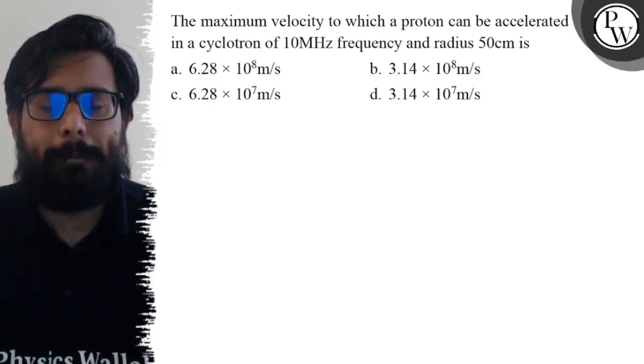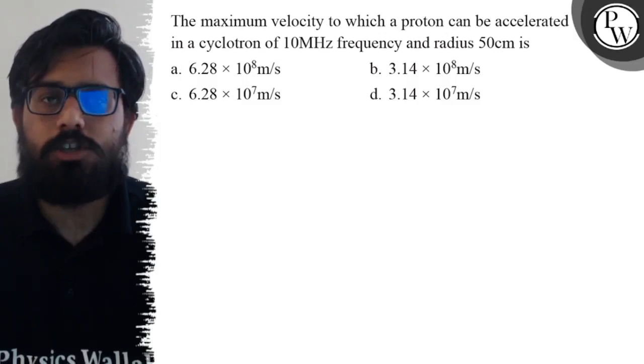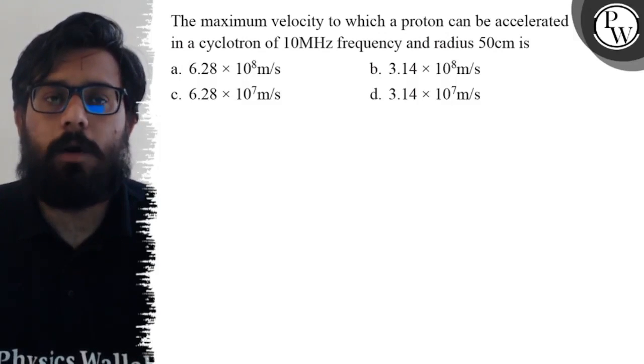Hello! Let's see the question: The maximum velocity to which a proton can be accelerated in a cyclotron of 10 MHz frequency and radius 50 centimeters is - your first option is 6.28 × 10^8 meters